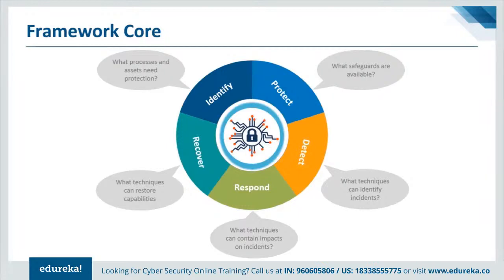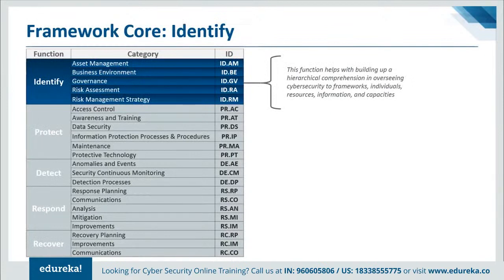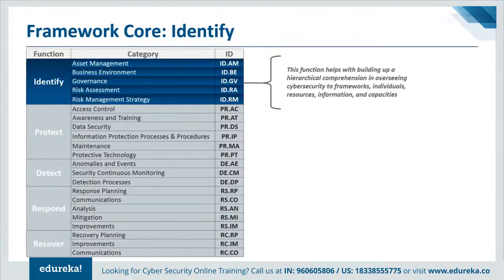The functions are at the highest level of abstraction in the framework, acting as the backbone of the framework core around which all other elements are organized. The first function is Identify, which helps develop an organizational understanding to manage cybersecurity risk to systems, people, assets, data, and capabilities. The activities in the Identify function are foundational for effective use of the framework. Understanding the business context, resources that support critical functions, and related cybersecurity risks enables an organization to focus and prioritize its efforts. Examples of outcome categories include asset management, business environment, governance, risk management, and risk assessment.